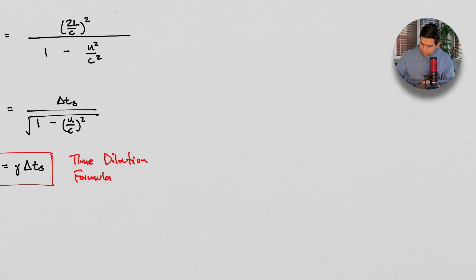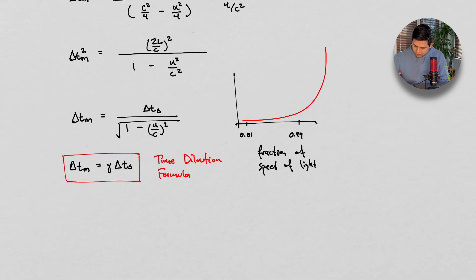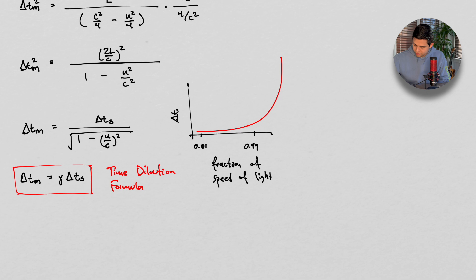And the relationship really looks like this, where the relationship looks like this. As we move, say this is like 0.01% of the speed of light. And then we get to this point, where it's like 0.99, or 99% of the speed of light. These are the fraction of speed of light. And the y-axis would be the change in time. So that difference gets much bigger as we go, as we get closer to the speed of light.